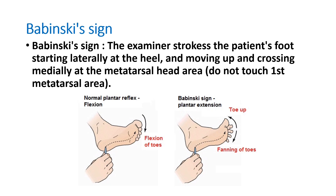To perform the Babinski sign, the examiner strokes the patient's foot starting laterally at the heel, moving up and crossing medially at the metatarsal head area. Do not touch the first metatarsal area. Try to fix the ankle joint — not too tightly, but enough to allow free flexion and extension at the ankle joint while preventing the limb from moving on the bed.